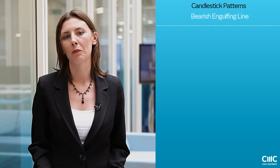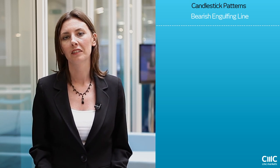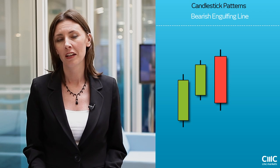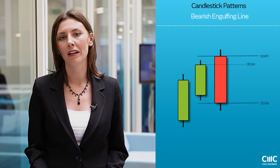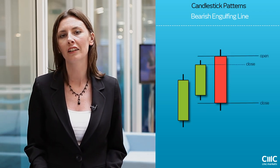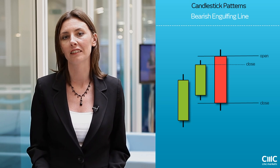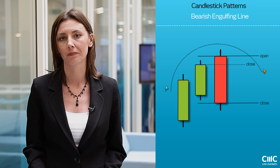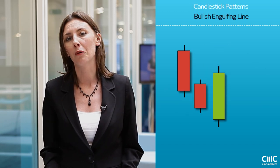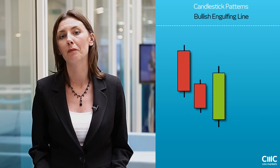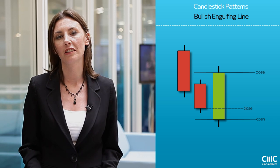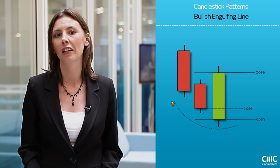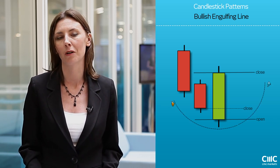The engulfing line is probably one of the easiest candlestick formations to spot. You can see in the graphical representation that the last red candlestick we can see completely engulfs the previous trading session, which can often indicate a key reversal point. Conversely, you have your bullish confirmation in the bullish engulfing where you'll often see this at the bottom of a downtrend, and it can often precipitate a move higher in the market.